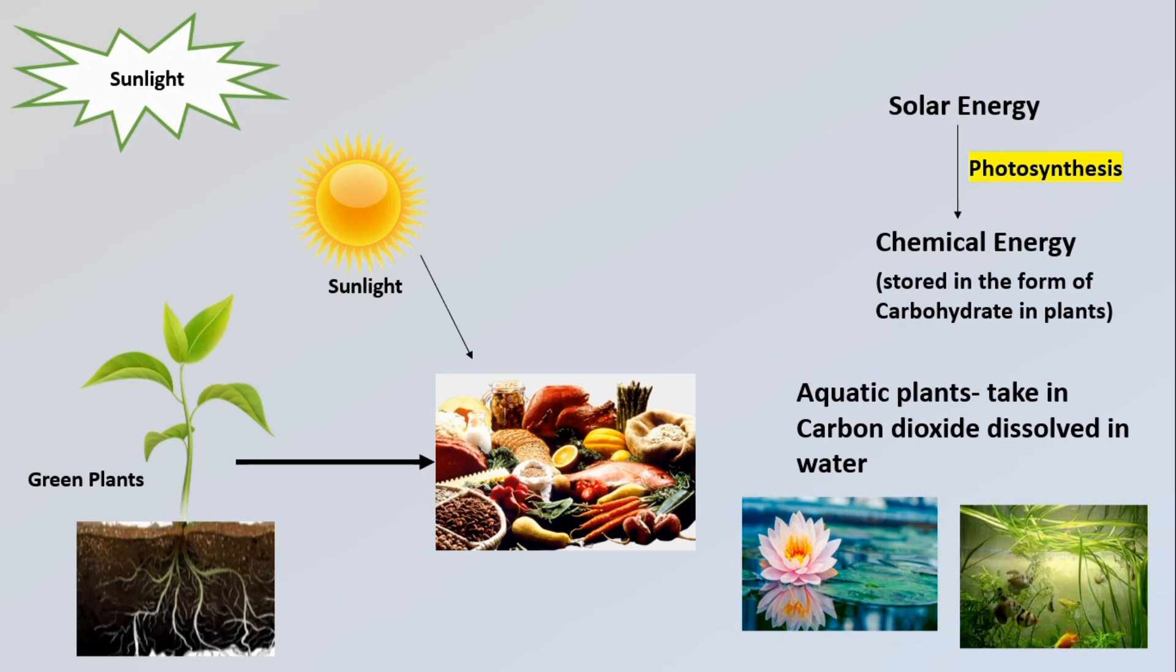Aquatic plants like hydrilla, water lily and valisnadia take in carbon dioxide dissolved in water to prepare their food and give out oxygen during the process. The major materials required by plants for photosynthesis are water and minerals, carbon dioxide, chlorophyll and sunlight.